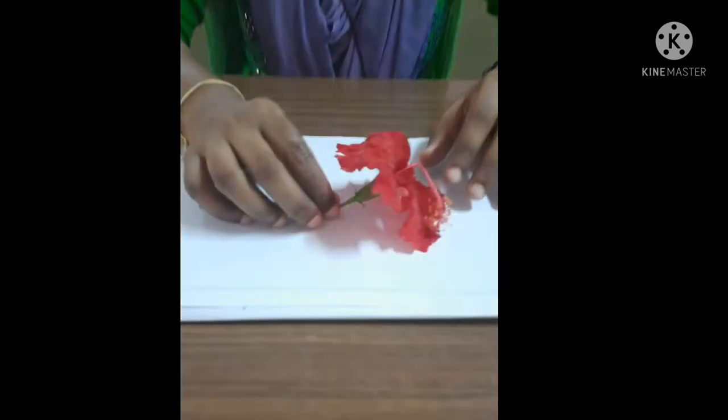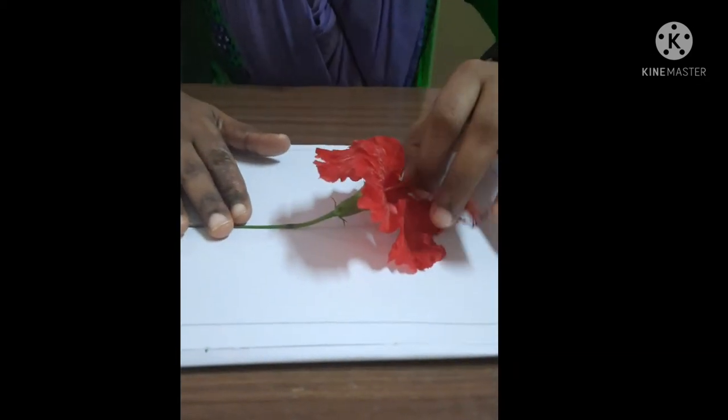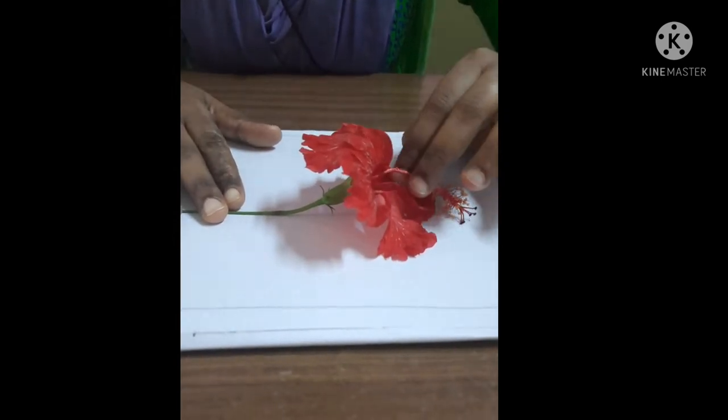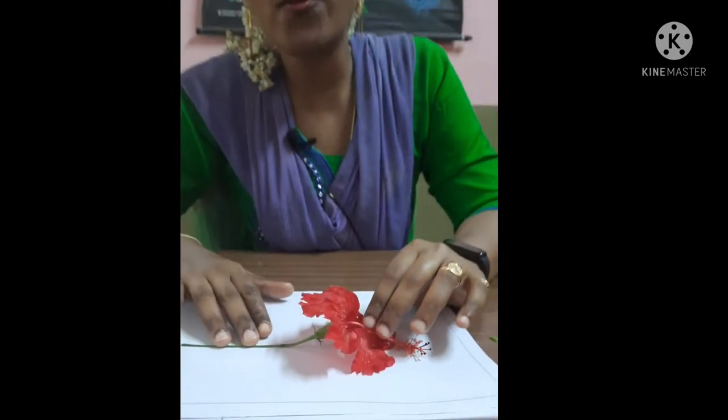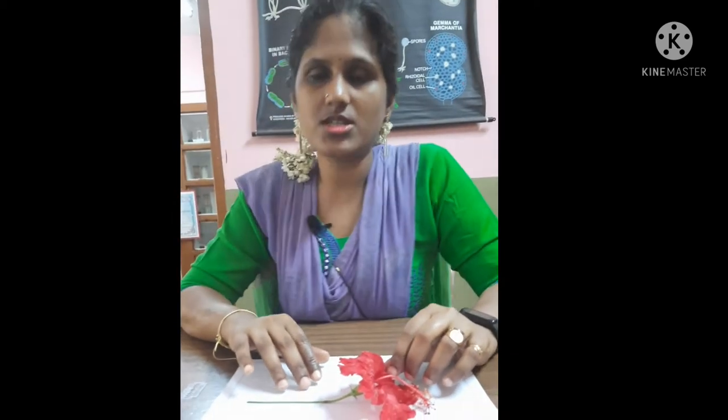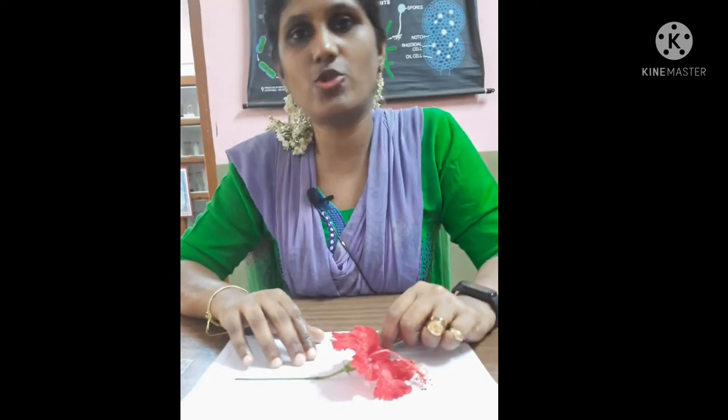Good morning students. In the last class we studied about the stem and the root function. In this class we are going to study one important part of the plant which is flower. Flower is the reproductive part of the plant. Reproduction means production of young ones or offsprings, and it is important for continuity of life.